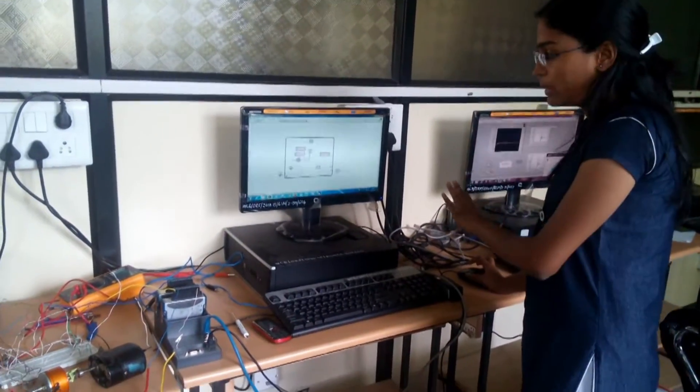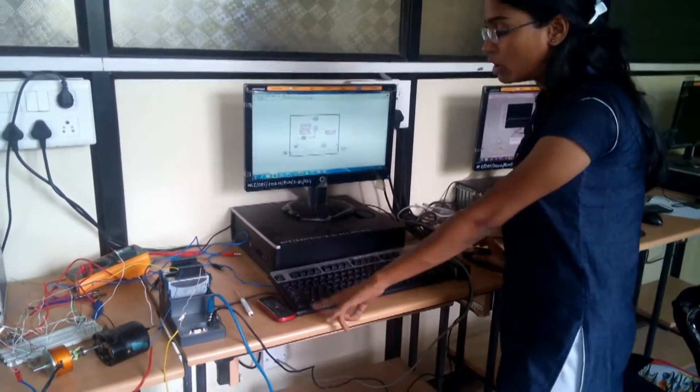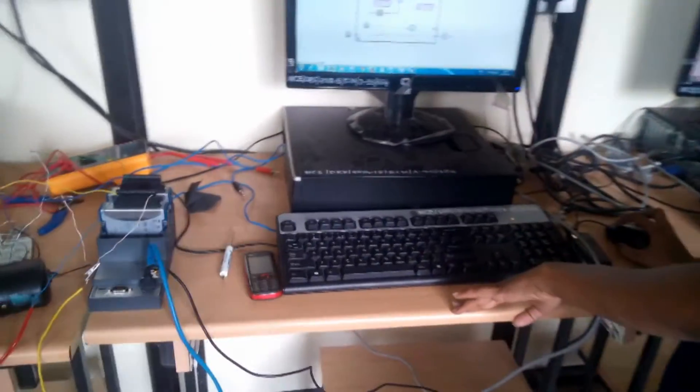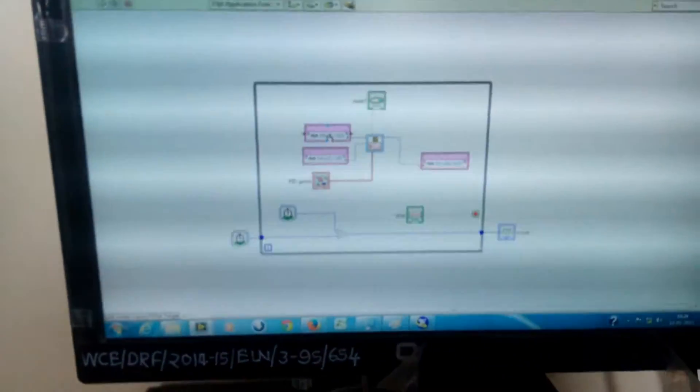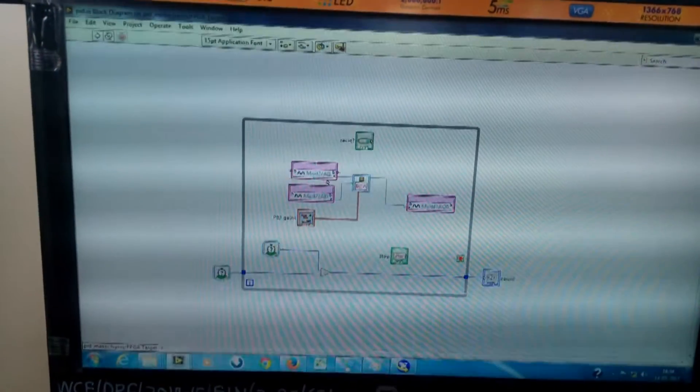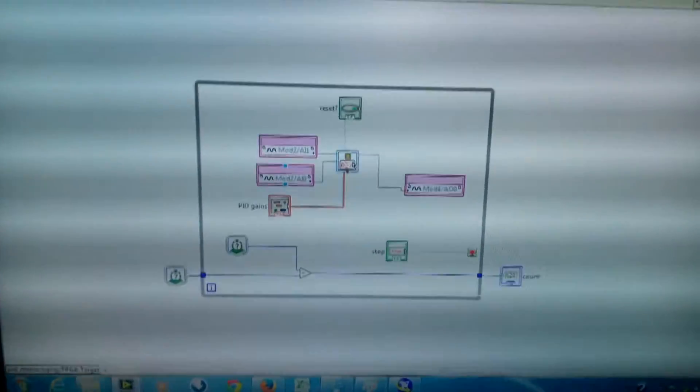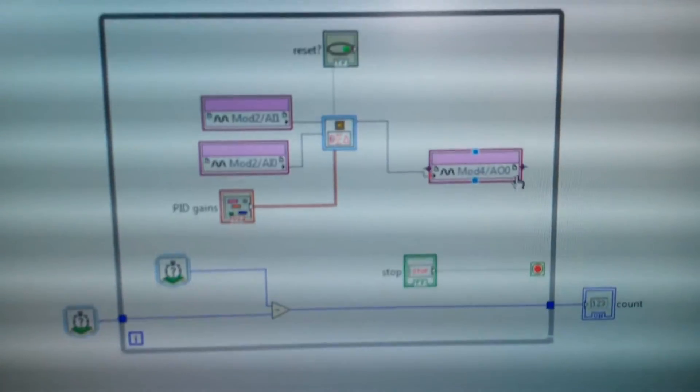To implement this PI is shown here on the cRIO. We have two data modules accordingly. Here it is shown in the block panel. This is the input module and these two are the input module. This is the main block of PI which we are using for our project. And this is the output module.